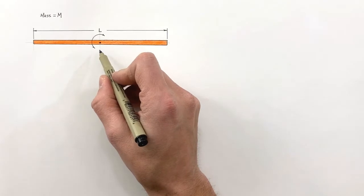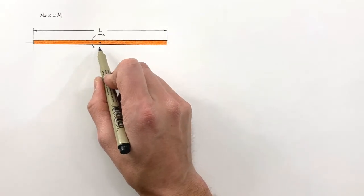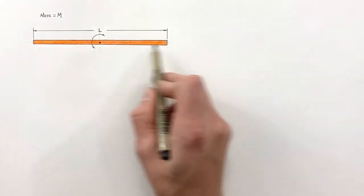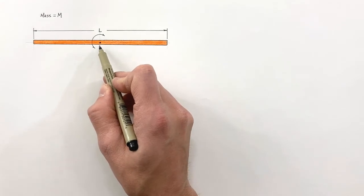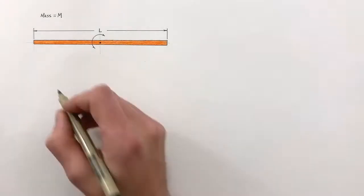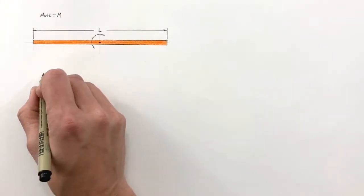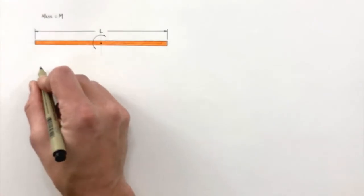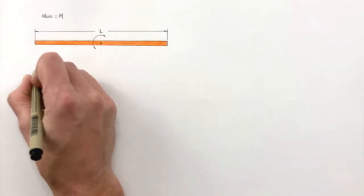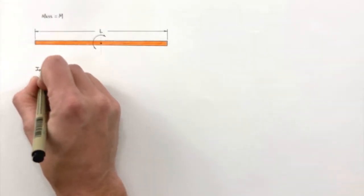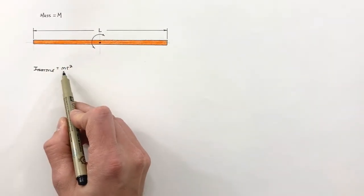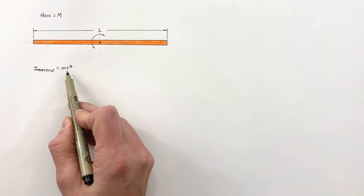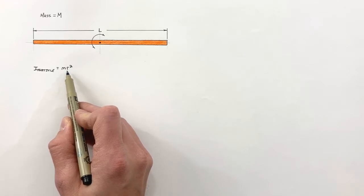Today we're going to derive an equation for the rotational moment of inertia of a long thin rod when rotated around its center. We know the rotational moment of inertia of a particle is given by the equation mr², where m is the mass of the particle and r is the distance between the particle and the axis of rotation.